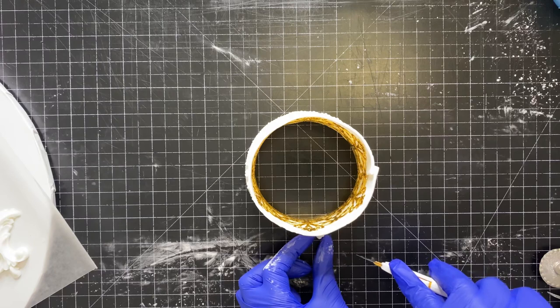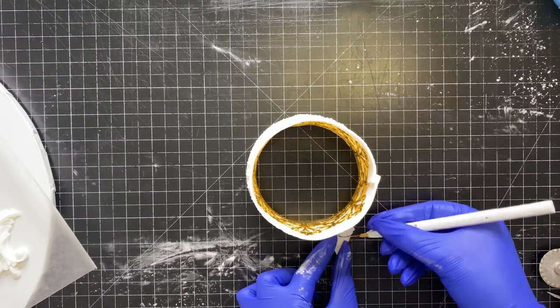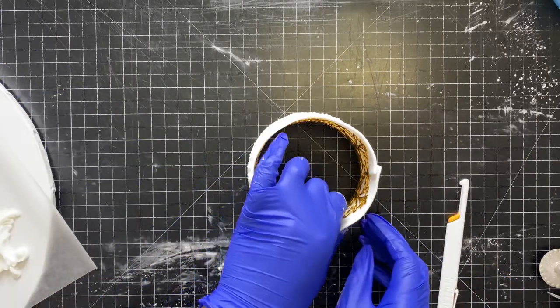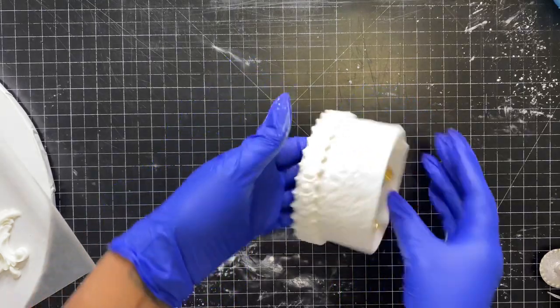But if you need it immediately, if you have less than 24 hours, you have a rush cake order, whatever it may be, go ahead and add tylose. It'll dry a little quicker that way, you'll be able to paint it and place it on your cake.